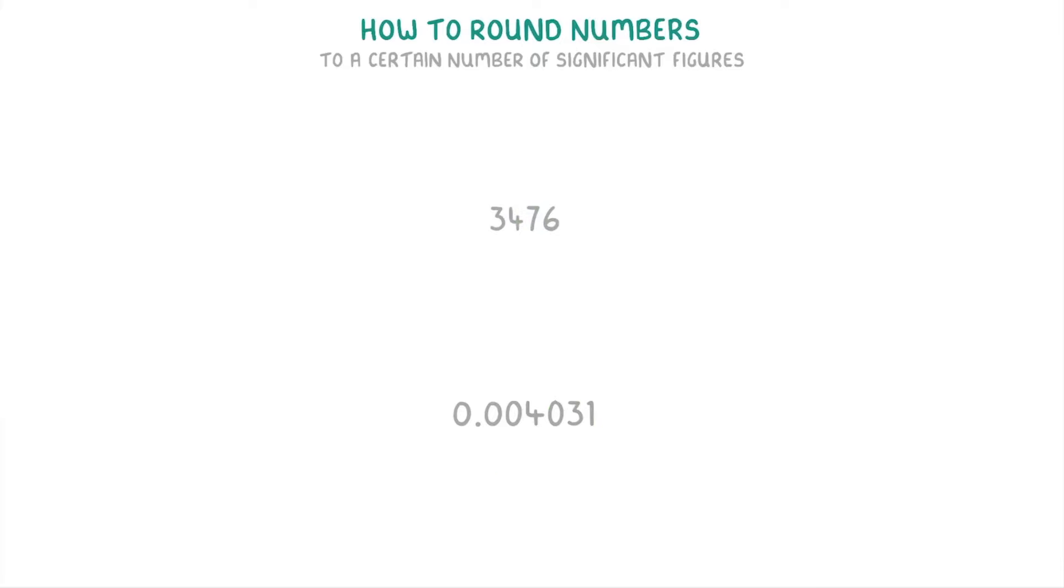So with that out of the way, let's now try a couple of questions. To round 3476 to two significant figures, the first thing we do is find the second significant figure, which is this four.